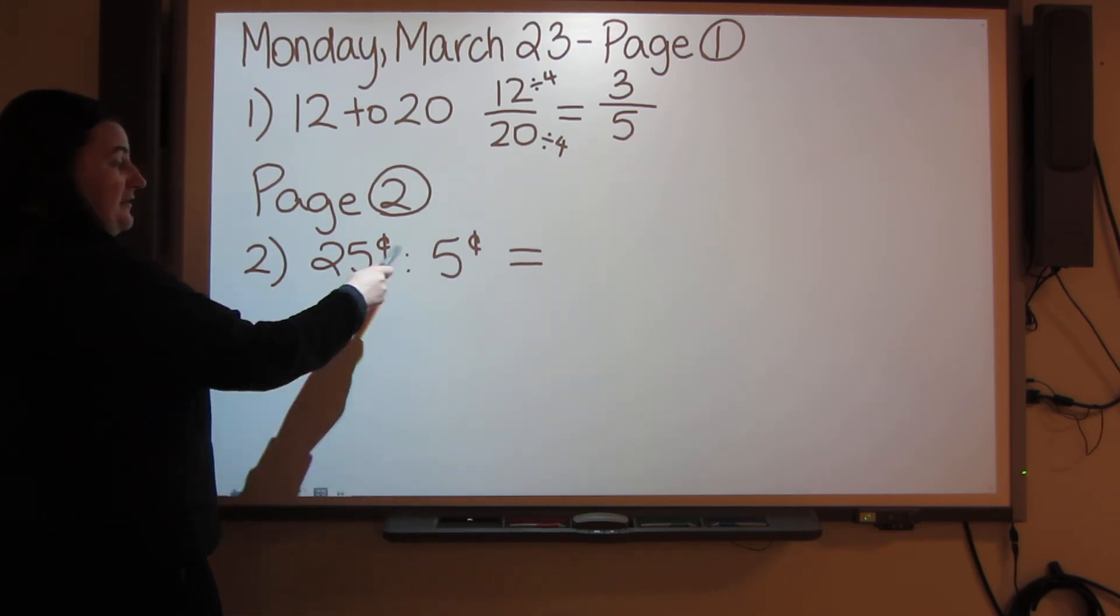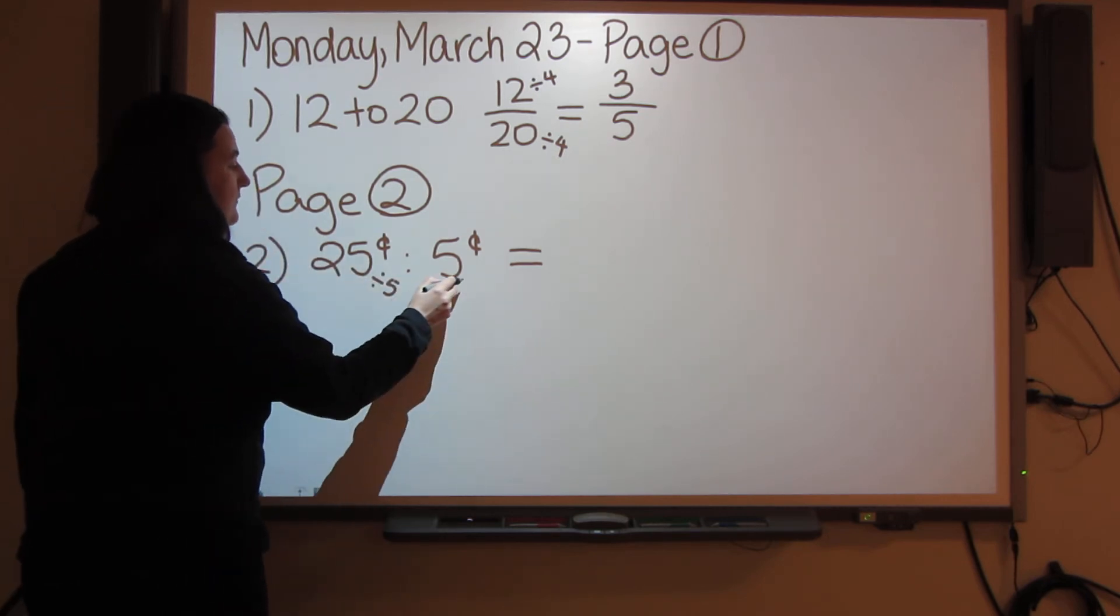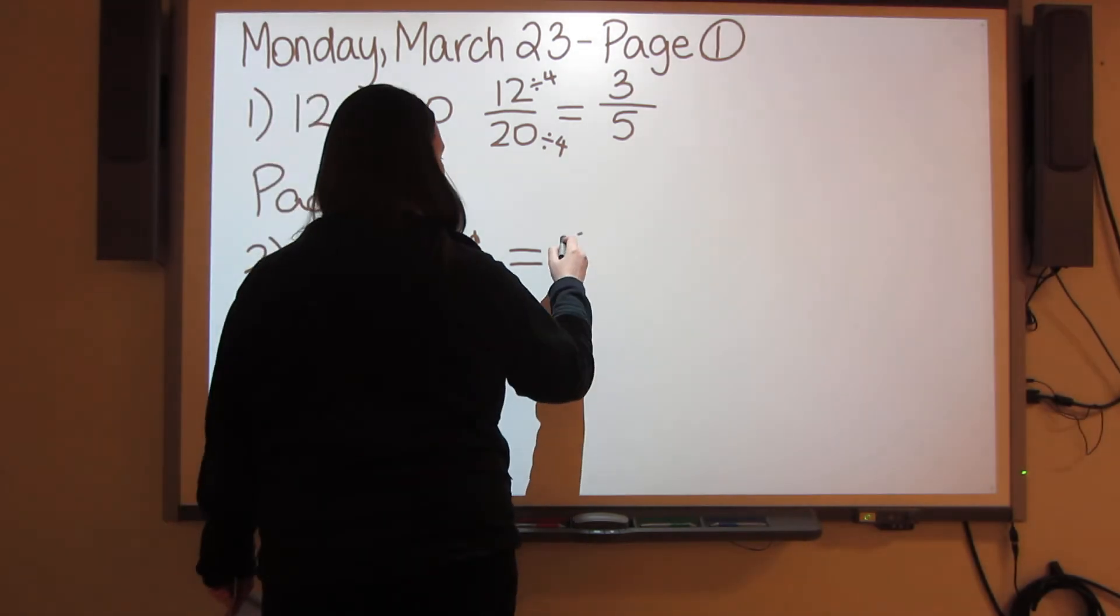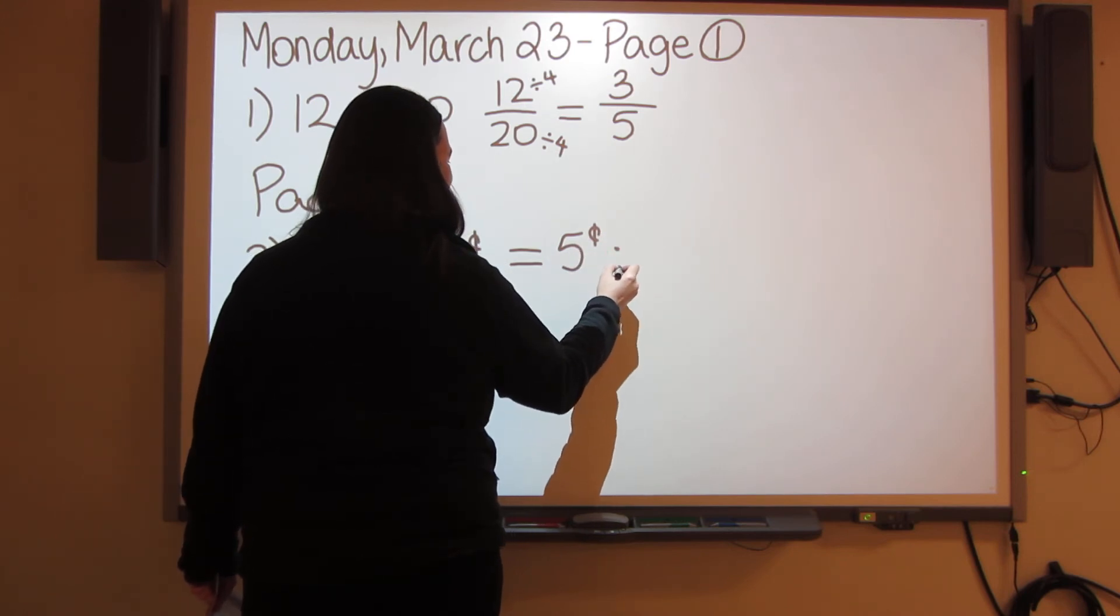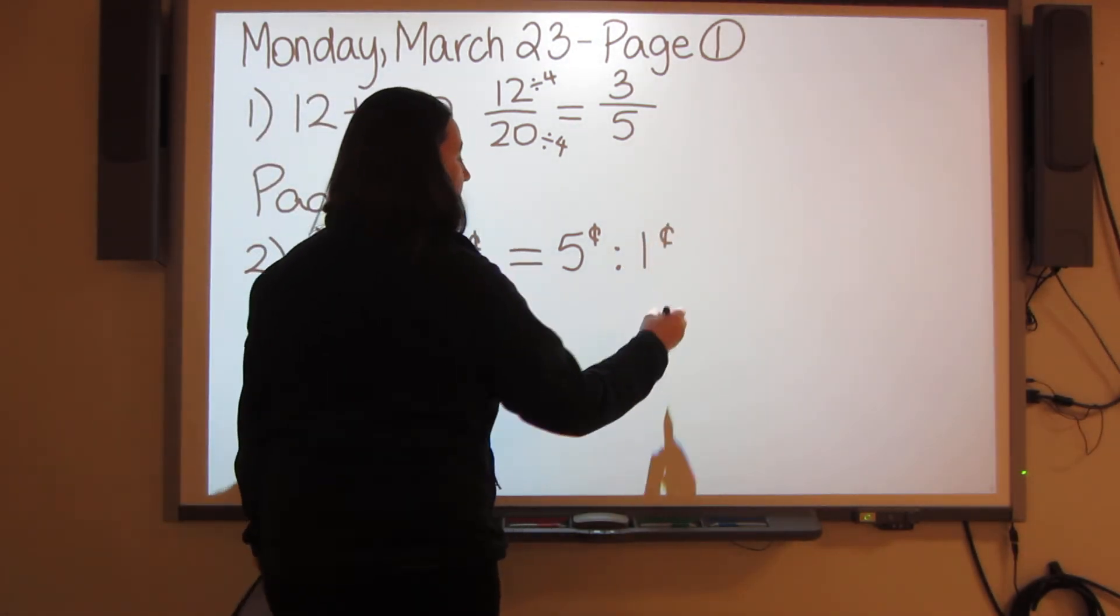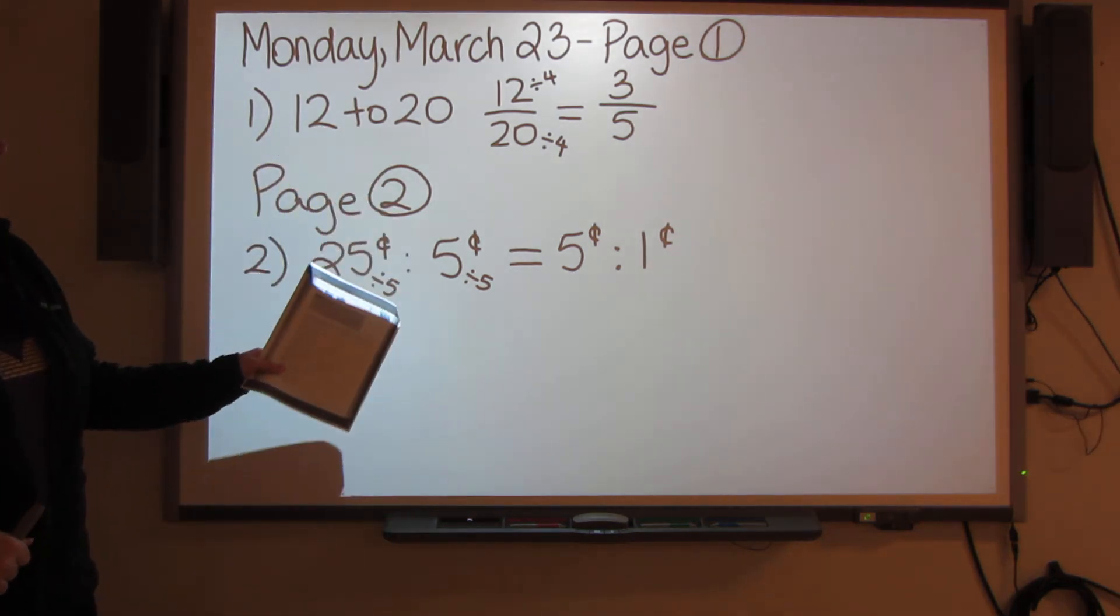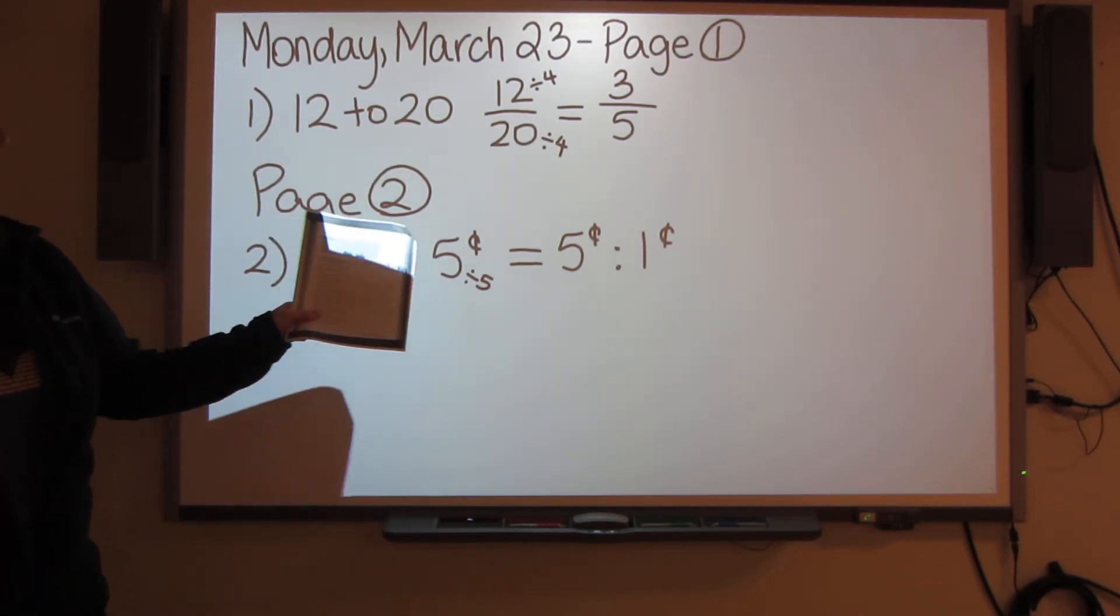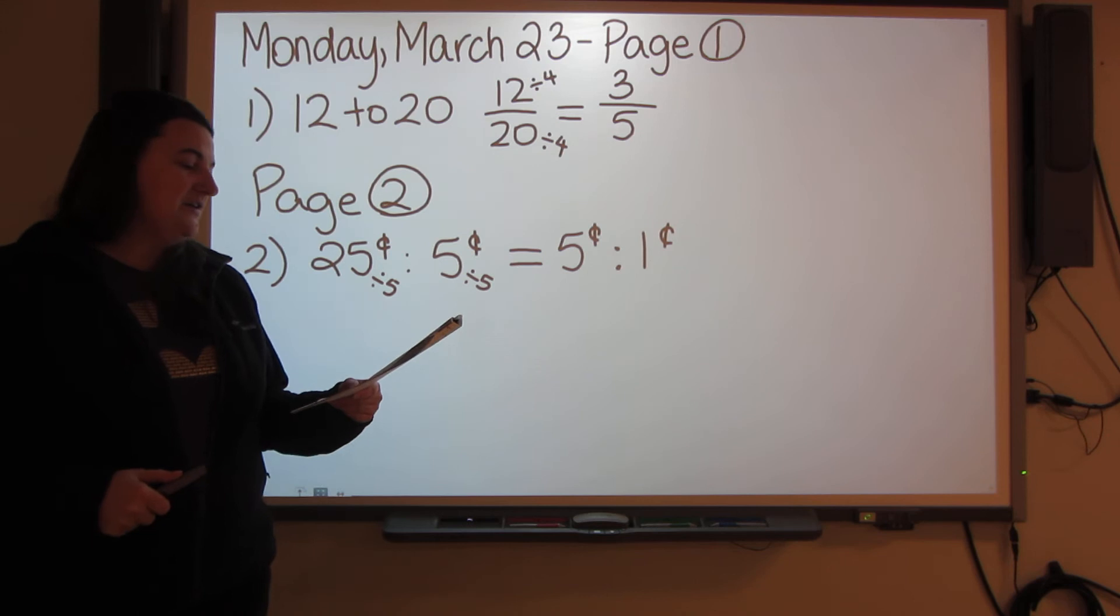They both end with 5, so I know I can divide them both by 5. 25 divided by 5 is 5, and 5 divided by 5 is 1. So my actual ratio is 5 to 1. I've taken my units, converted them into the same unit - they're both cents - and then I took my ratio and reduced it to lowest terms. That's how you're going to do the questions on page 2.